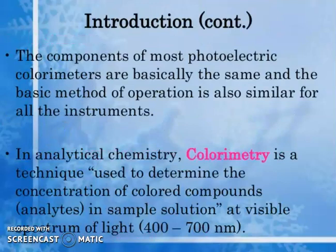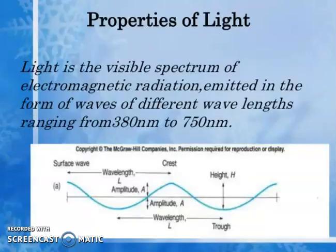The components of most photoelectric colorimeters are basically the same and the basic method of operation is also similar for all instruments. In analytical chemistry, a colorimeter is a technique used to determine the concentration of colored compounds analyzed in a sample solution at the visible spectrum of light, 400 to 700 nanometers.